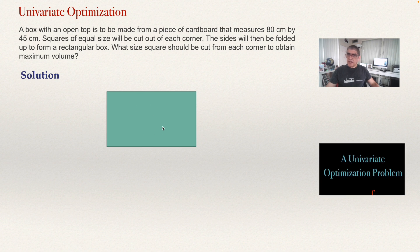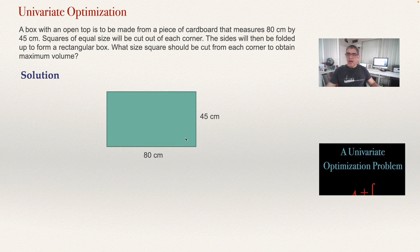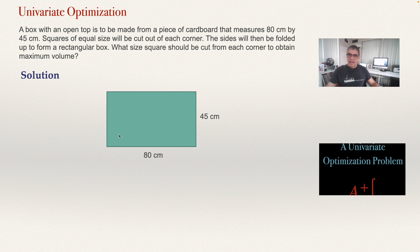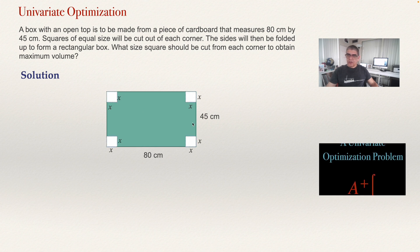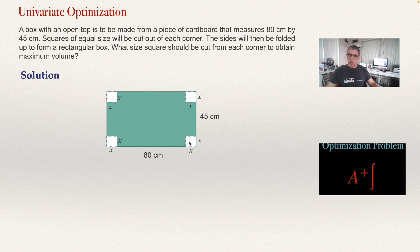The problem consists of a piece of cardboard that measures 80 centimeters by 45 centimeters. We want to cut squares in the corners of the cardboard in such a way that we are going to construct a box. We are going to cut squares of the same size in the corners and then fold to create a box with an open top. We want to know how big the squares need to be to get the maximum volume.